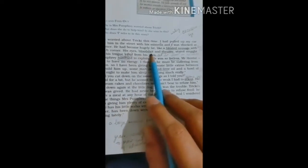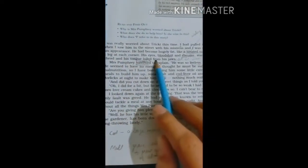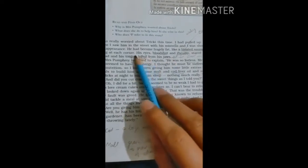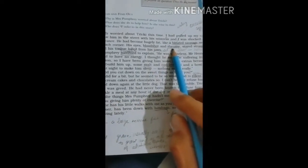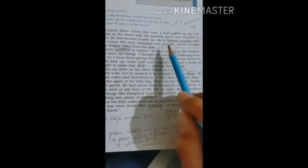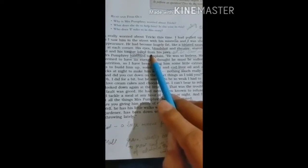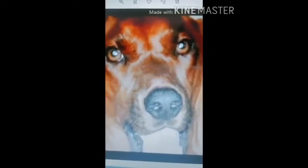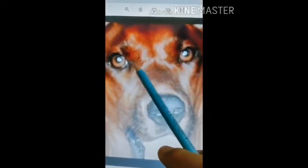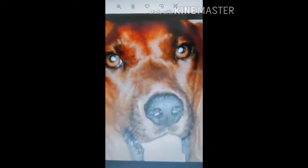His eyes bloodshot and rheumy stared straight ahead and his tongue lolled from his jaws. Bloodshot means red like blood. And rheumy means watery. Water was there in his eyes. And he was looking forward straight. And his tongue lolled out from his jaws.